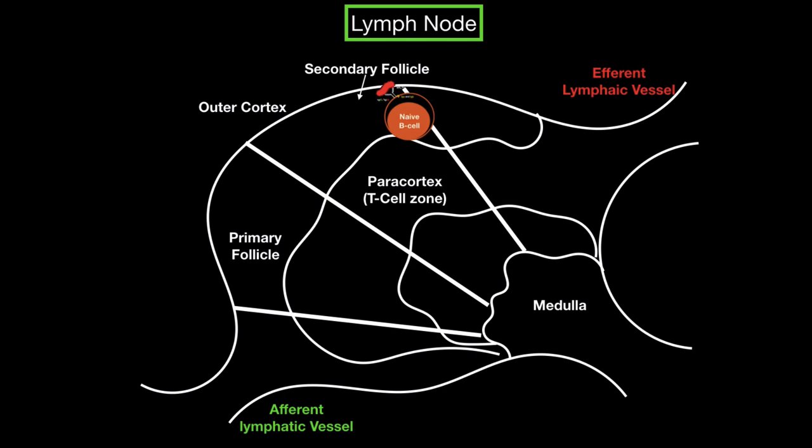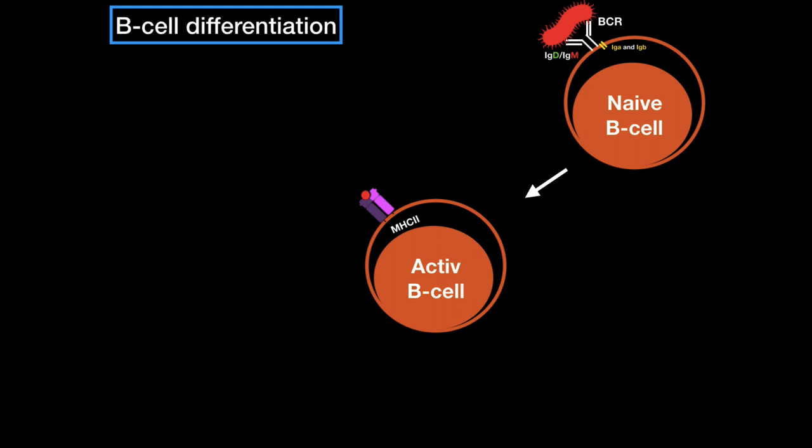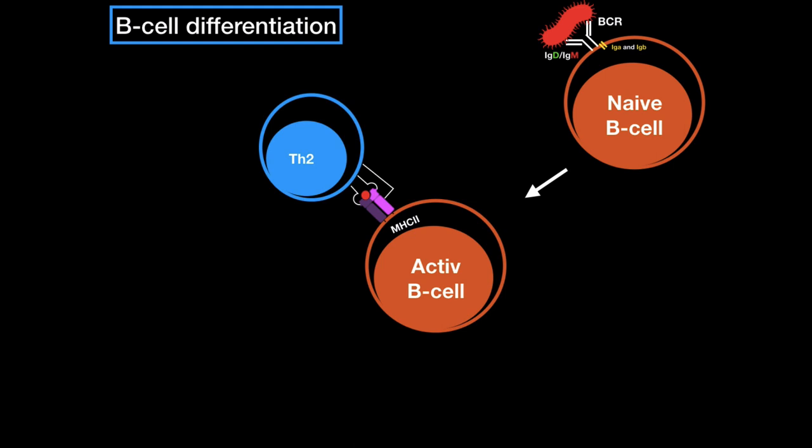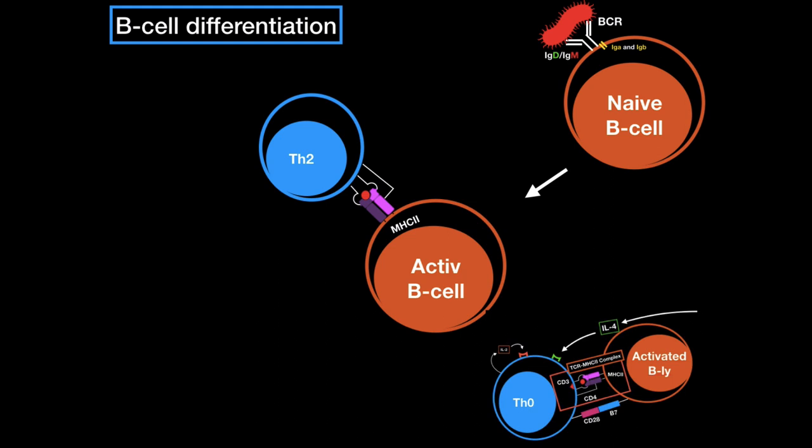The B cell has now bound to the antigen, endocytosed it, and presented it on an MHC class 2 molecule to show it to a T helper cell 2, which was initially activated by another antigen-presenting cell that engulfed the exact same microorganism. Keep in mind that if the B cell encounters a naive T helper cell, it can help differentiate it, because the B cell is also a professional antigen-presenting cell, which expresses B7 as well.